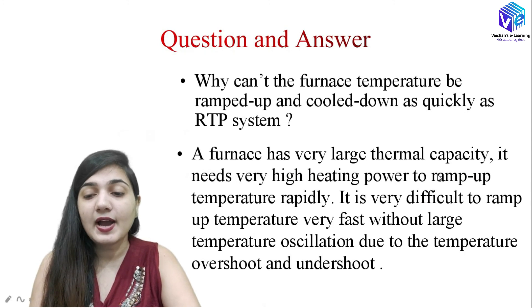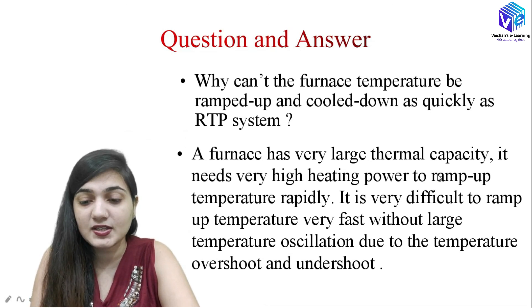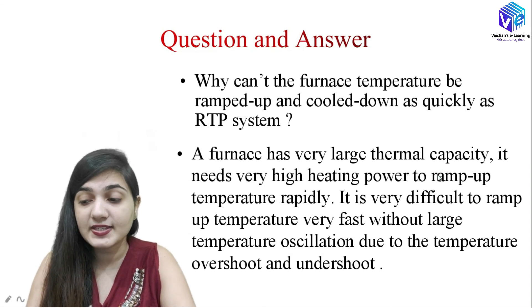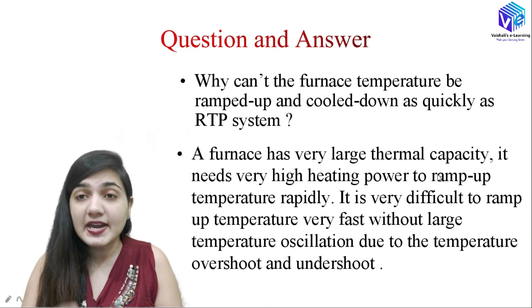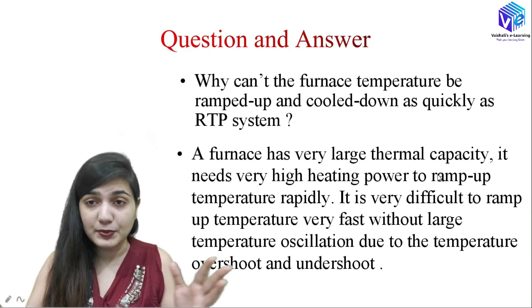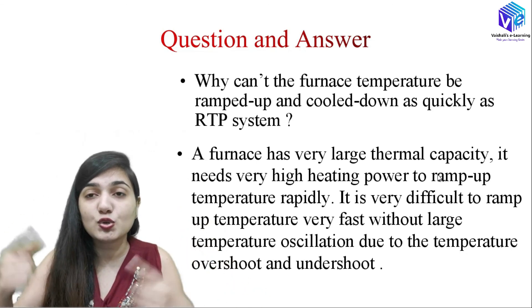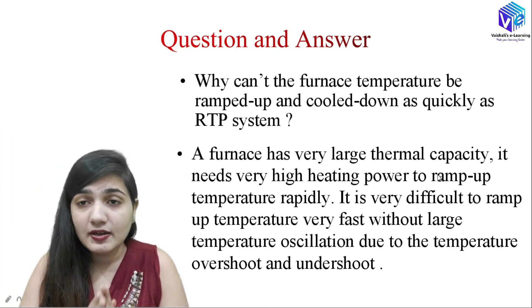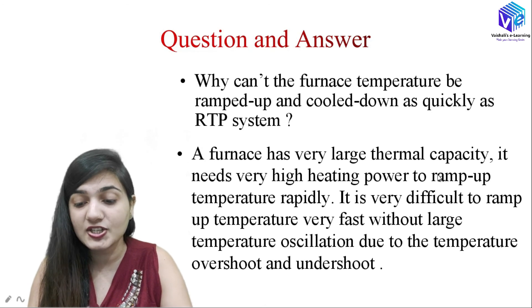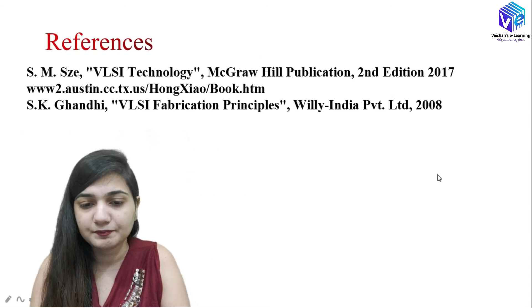Now the question is: why can't the furnace temperature be ramped up and cooled down as quickly as an RTP system? The furnace has a very large thermal capacity, which requires very high heating power to ramp up the temperature rapidly. It is very difficult to fluctuate the temperature to very high and very low values at a very short instant of time without large temperature oscillations due to temperature undershoot and overshoot. This is the reason we cannot use the furnace for RTP.